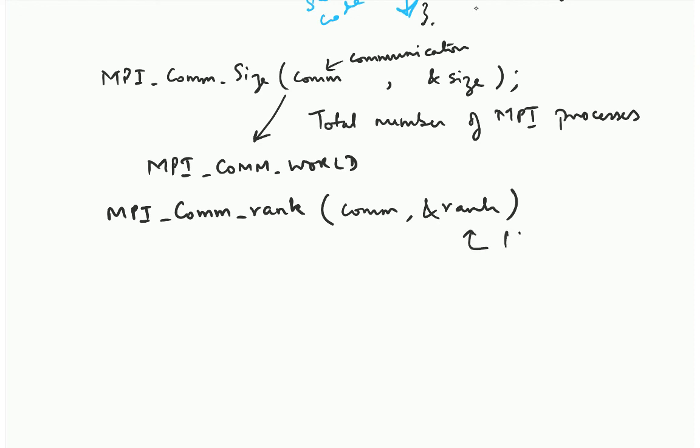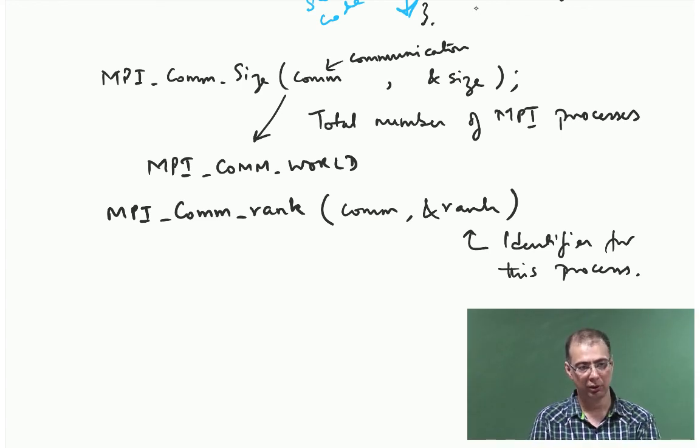This basically returns the identifier for this process. It basically allocates numbers from 0 to n minus 1 if there are n processes. Each process will get a unique identifier, that is important. You need this to do the communication.